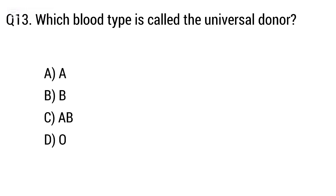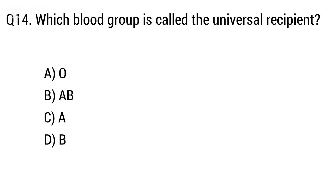Question 13: Which blood type is called the universal donor? Option A: A, B: B, C: AB, D: O. The right answer is option D, O.